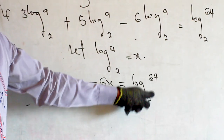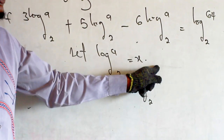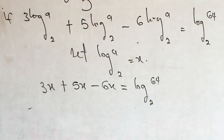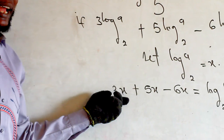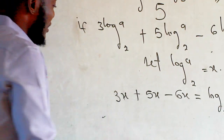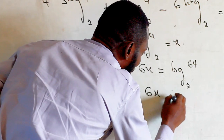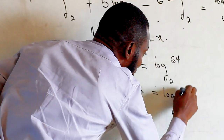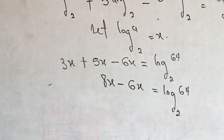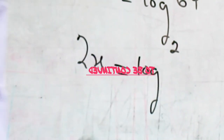So we have log 64 base 2. Substituting, we get 3x plus 5x equals 8x, minus 6x, giving us 2x equals log 64 base 2.